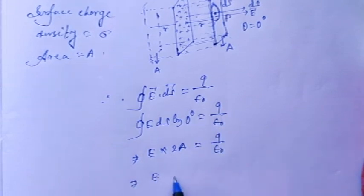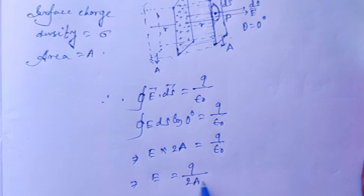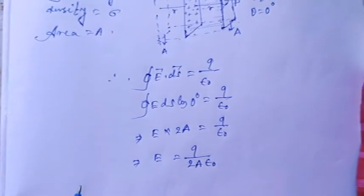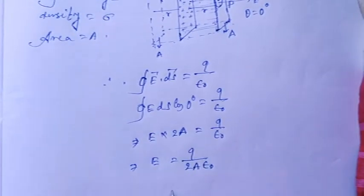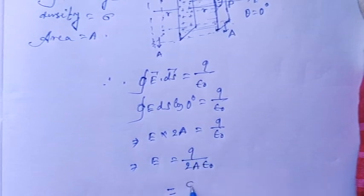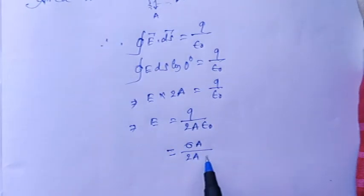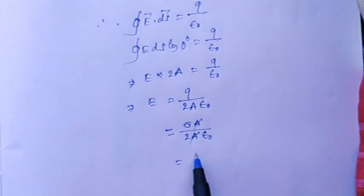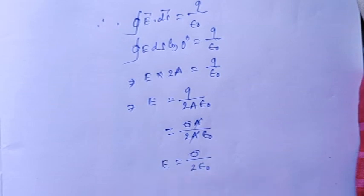Therefore, electric field E equals q divided by 2A epsilon naught. Now, since q equals sigma times A, we substitute: E equals sigma times A divided by 2A times epsilon naught. The area A cancels out. Therefore, E equals sigma by 2 epsilon naught. This is the electric field.